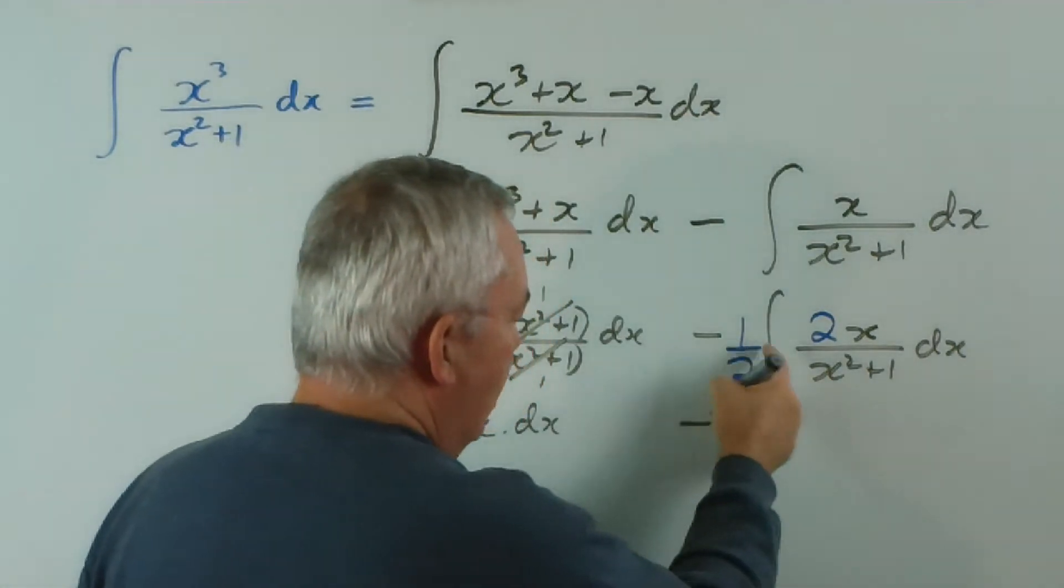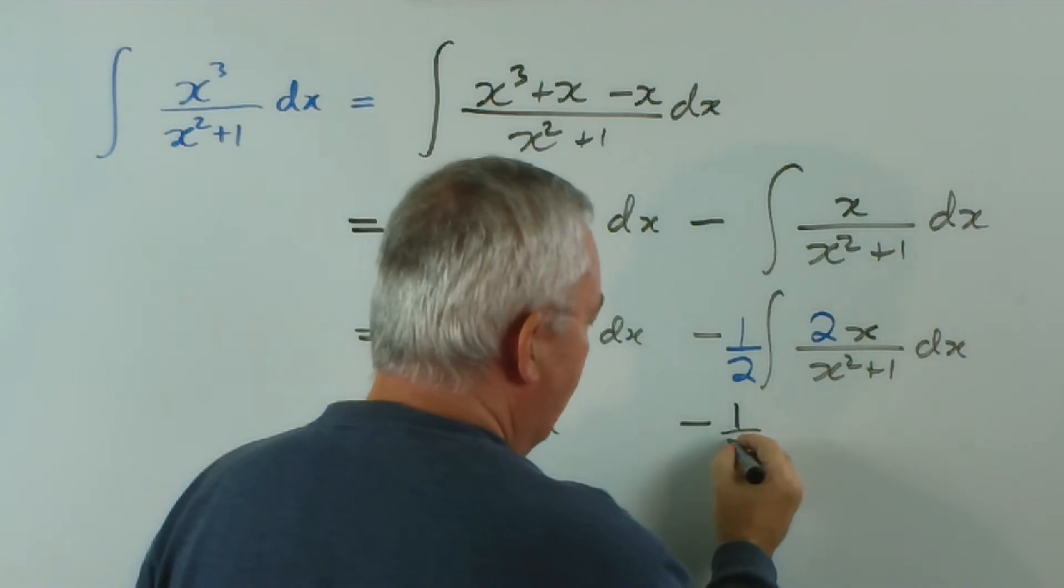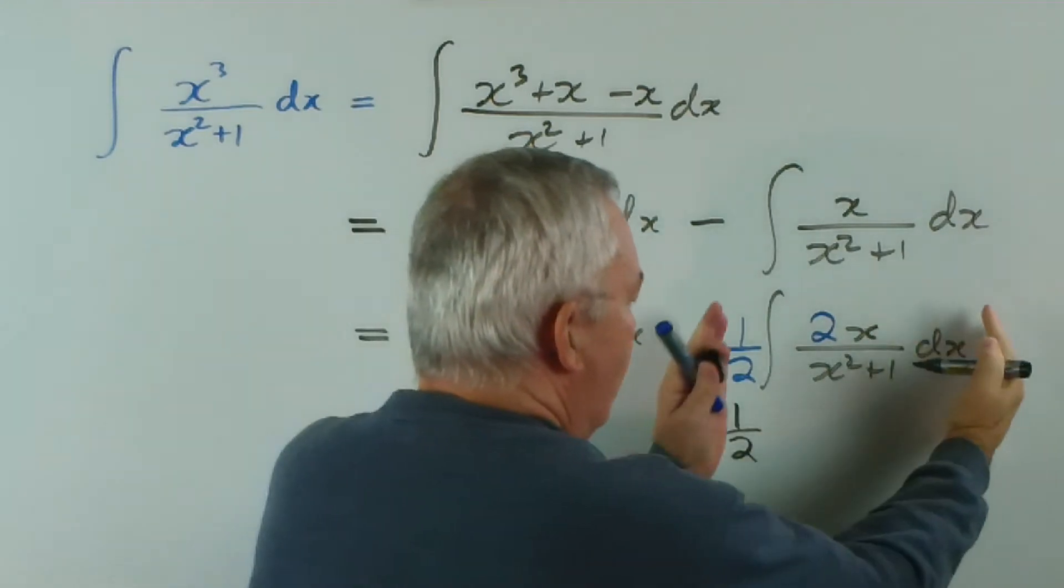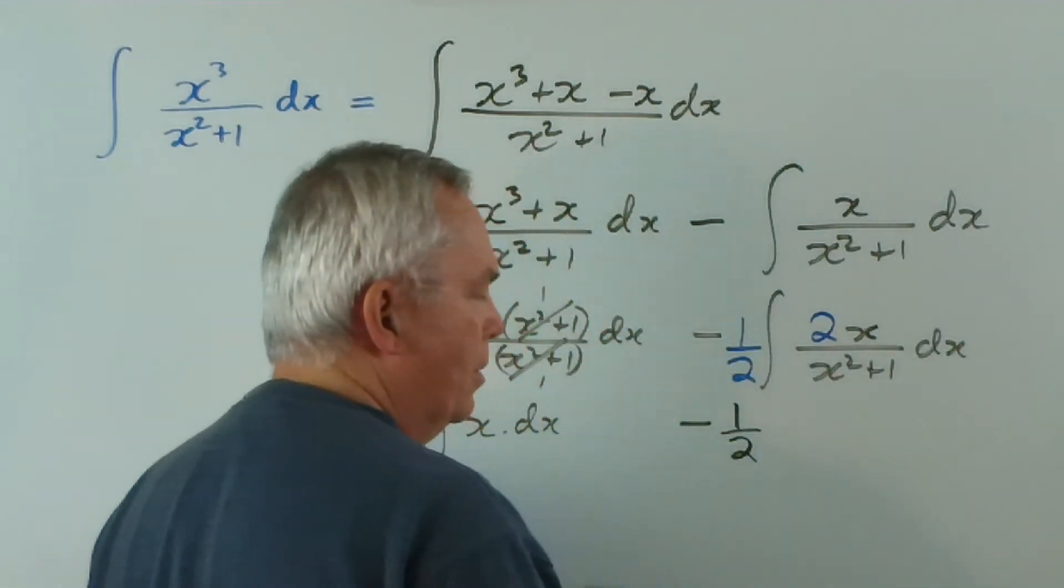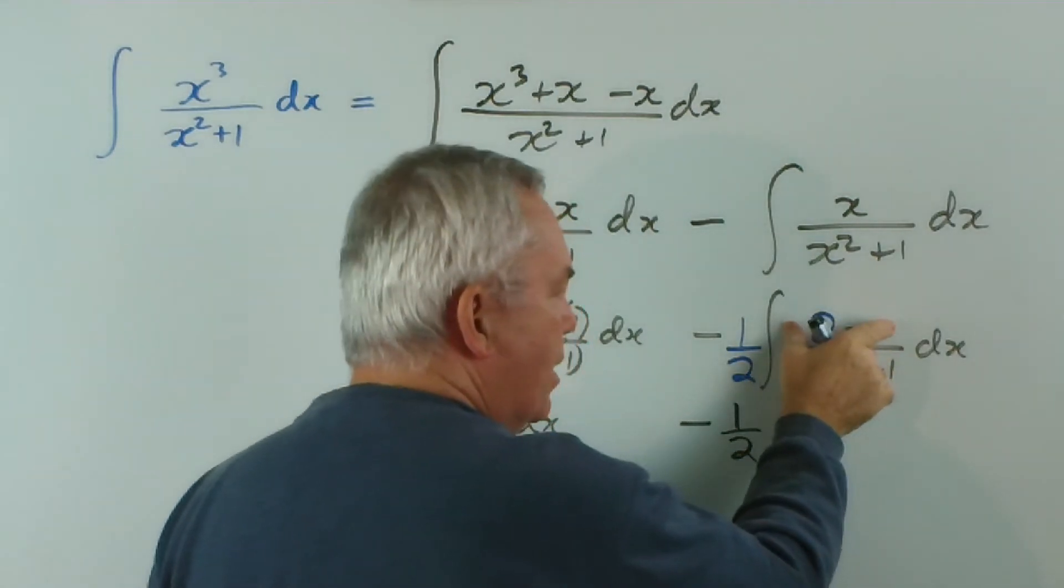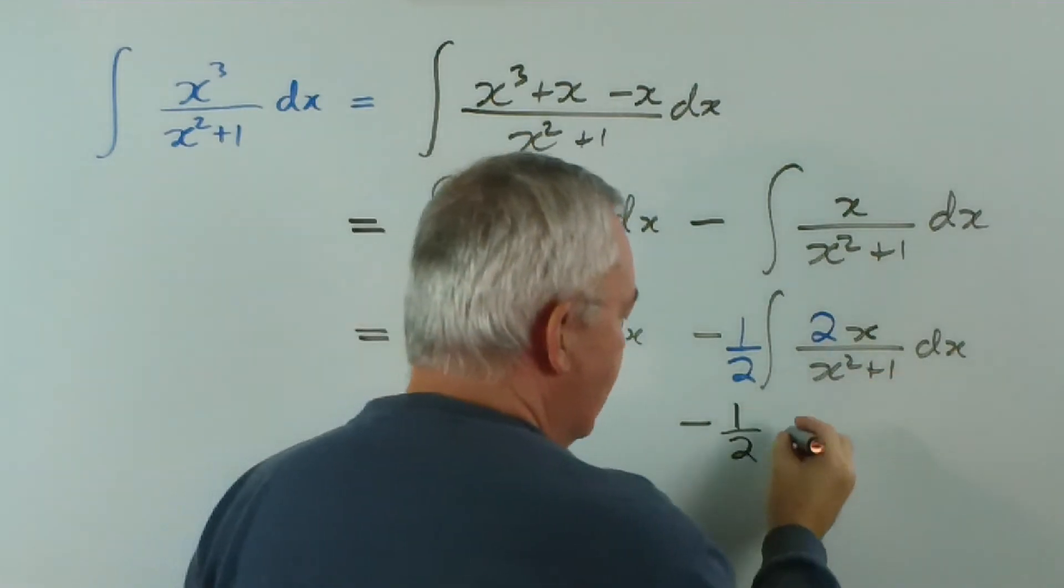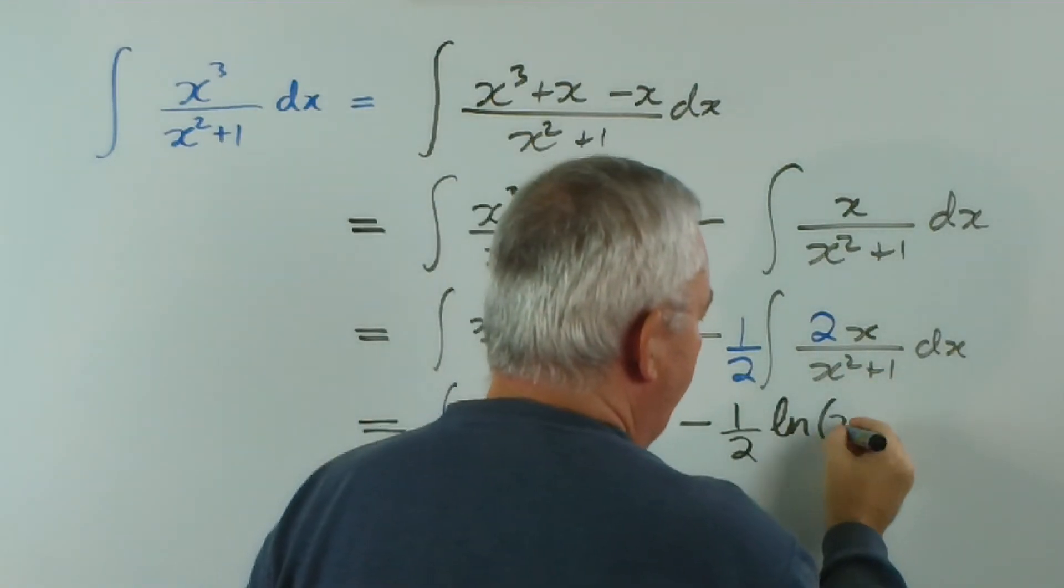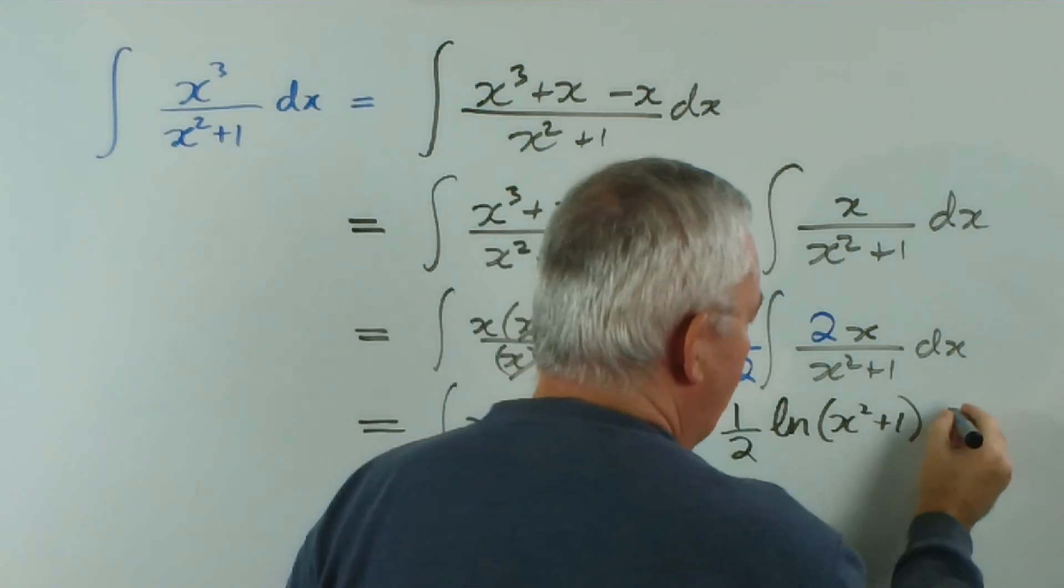And what we're left with of course is negative one half. And this now is a perfect logarithmic function because the numerator is the exact derivative of the denominator. So we have the logarithm of x squared plus 1 plus c.